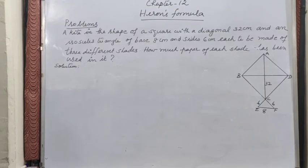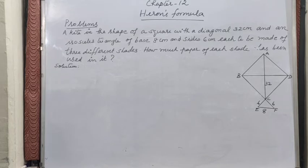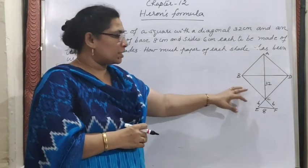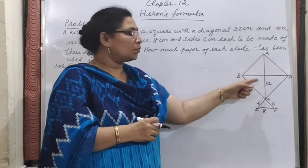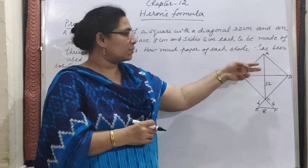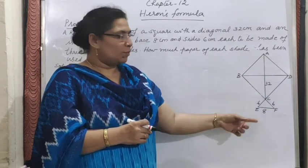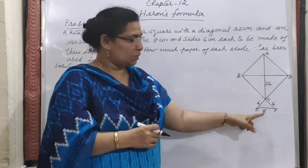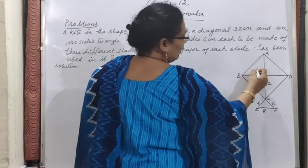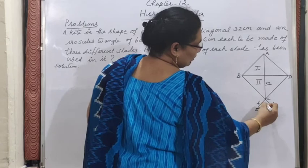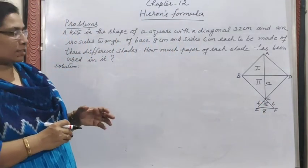Next problem: a kite in the shape of a square with diagonal 32 cm, and an isosceles triangle of base 8 cm and equal sides of 6 cm each, made up of three different shades. How much paper of each shade is used? ABCD is the square with diagonal 32 cm. Joining diagonal BD divides the square into triangles ABD and BCD — those are the first two shaded regions. The isosceles triangle is the third shade.